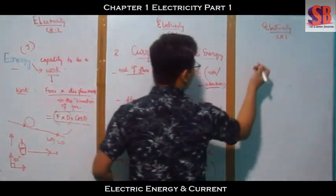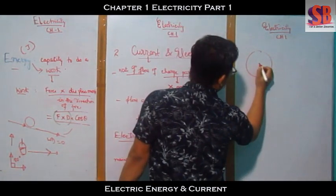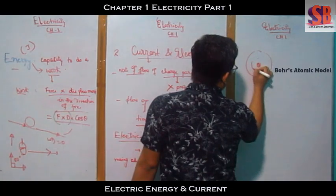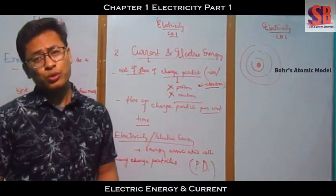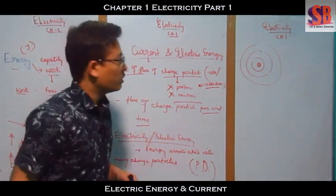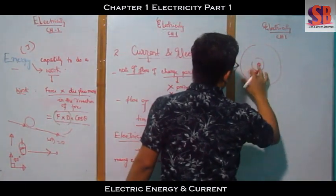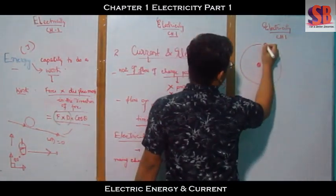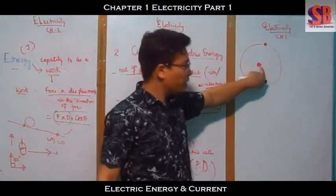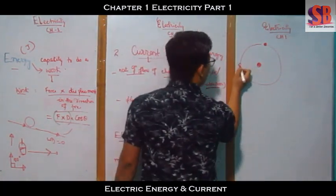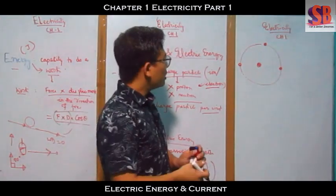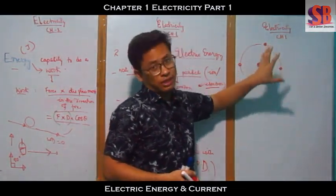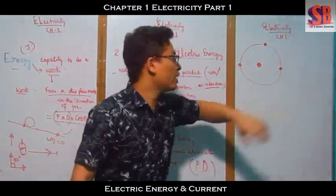In chemistry, we have the atom. The atom consists of protons and neutrons in the nucleus, and electrons on the outside. The outermost shell has valence electrons. Metals are natural conductors. A conductor has outermost shell electrons, and metals have these free valence electrons — that is why metals are good conductors.